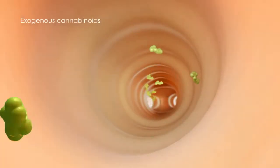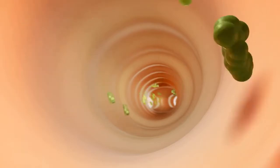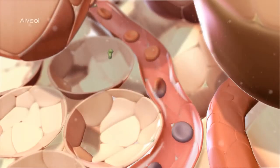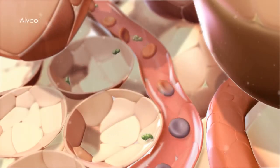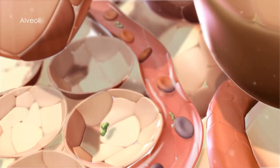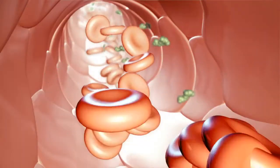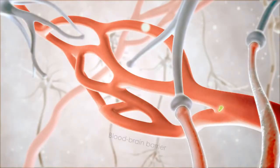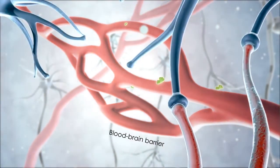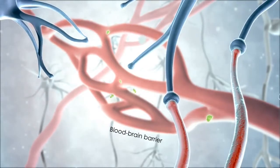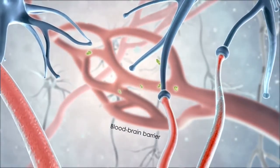When exogenous cannabinoids are inhaled, they travel through the respiratory tract to the alveoli of the lung where they diffuse rapidly into the circulatory system. They then travel through the bloodstream towards the CNS where they diffuse across the blood-brain barrier and into the surrounding tissues of the brain and spinal cord.